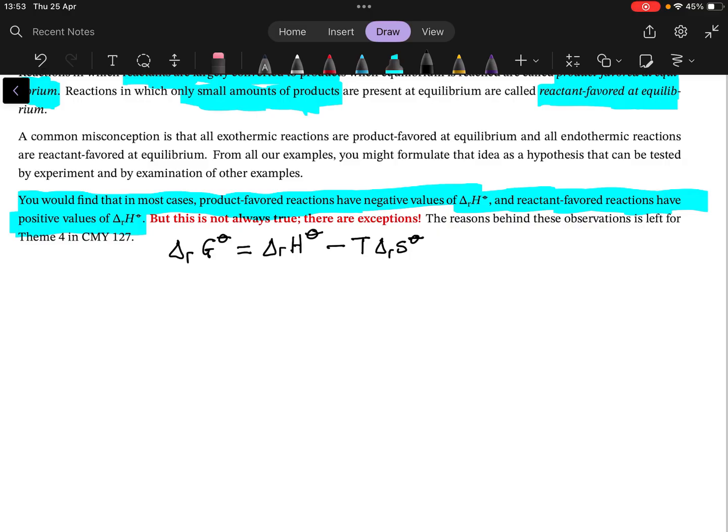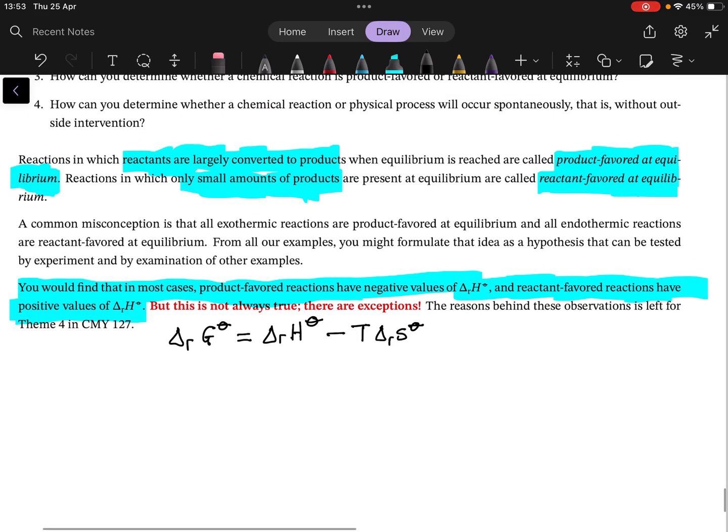That entropy is, sort of, you want to think about it as how chaotic a system is or how chaotic a system becomes. Does it become more chaotic or less chaotic? And it turns out that if a system becomes more chaotic, then it will occur more spontaneously. But it's outside of the scope for this.